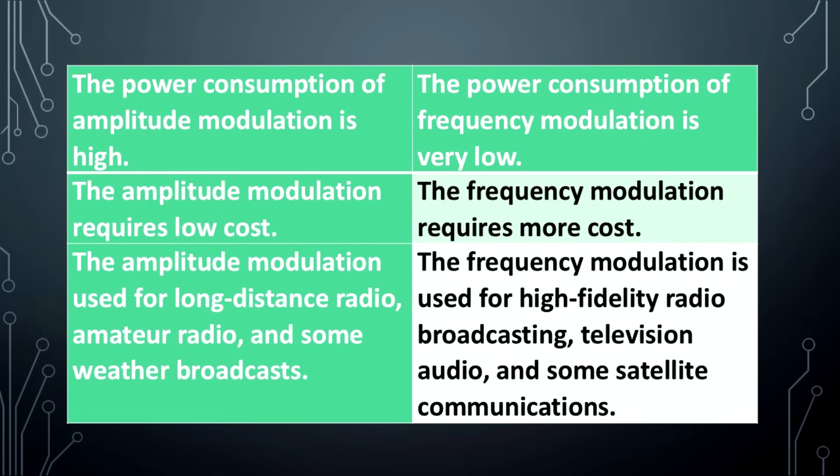Amplitude modulation is used for long-distance radio, amateur radio, and some weather broadcasts. Frequency modulation is used for high-fidelity radio broadcasting, television audio, and some satellite communications.